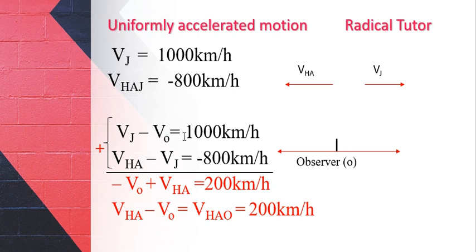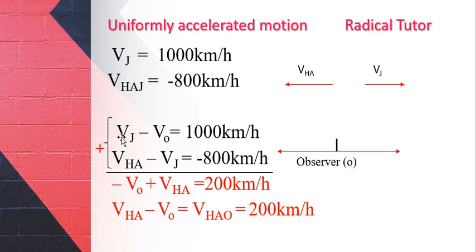The velocity of the jet relative to the observer is 1000 km per hour. The velocity of the hot air relative to the jet is negative 800 km per hour. So the result is negative 200 km per hour.